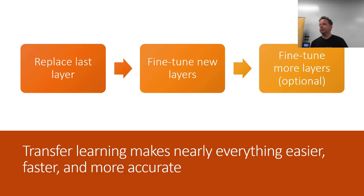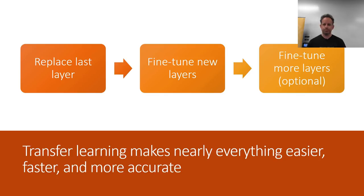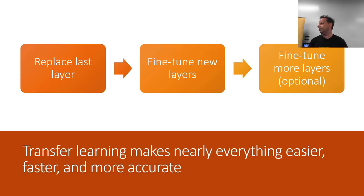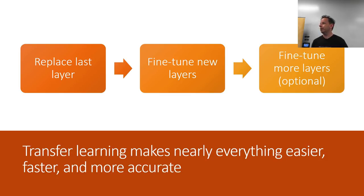This is where the FastAI library and the stuff we talk about in this class is vastly different from any other library or course — it's all focused on transfer learning, and it turns out you do a lot of things quite differently. The basic idea is: here's a network that does thing A, remove the last layer or so, replace it with a few random layers at the end, fine-tune those layers to do thing B, taking advantage of the features the original network learned, and then optionally fine-tune the whole thing end-to-end. You've now got something which probably uses orders of magnitude less data, is more accurate, and trained a lot faster.